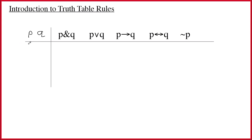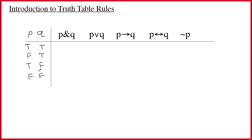Every sentence letter can have one of two values — it could be true or it could be false. Let's say P is the sentence 'Janet likes Jell-O.' That could be a true sentence or a false sentence. But if you've got two sentence letters, they could both be true, one false and the other true, or possibly they're both false. If you have two sentence letters, you have four combinations of possible truth values.